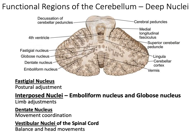Next, we have the deep nuclei of the cerebellum. These will be associated with the functional regions we just previously saw, color-coded accordingly. First, we're going to start with the fastigial nucleus. It's the most medial of them in the center, right where the vermis would be, and that's because it's also responsible for postural adjustment, just like the vermis. So those work together.